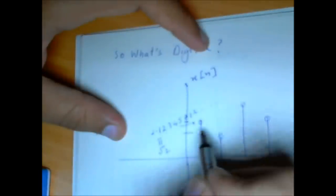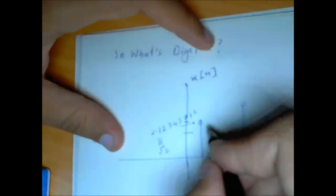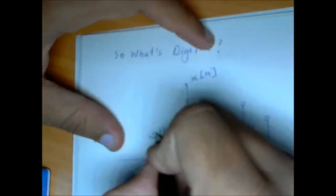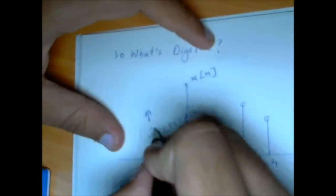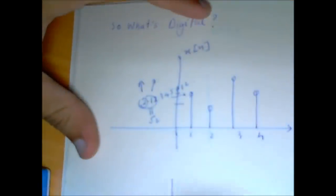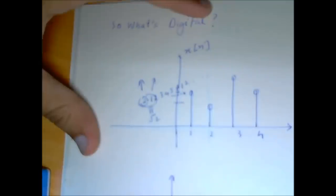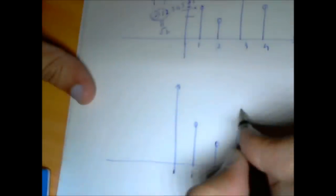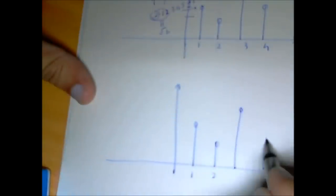A computer has limited memory. It has limited precision. So what we do is we also discretize the value of x. And this process is called quantization. So we might only store this digit, or we might only store these two digits.